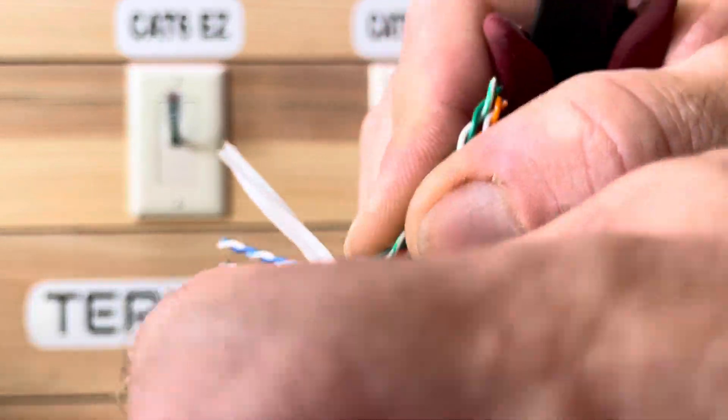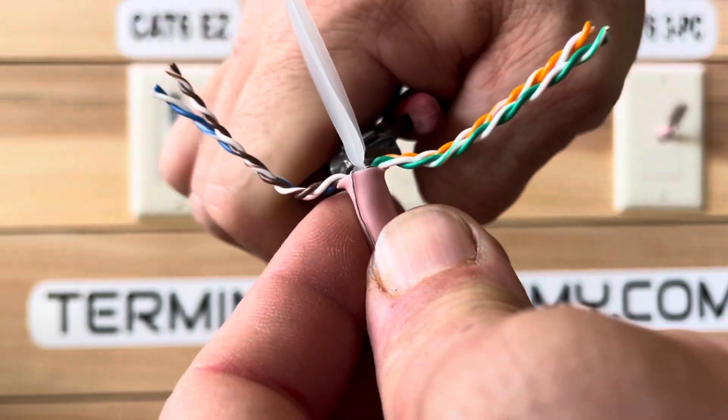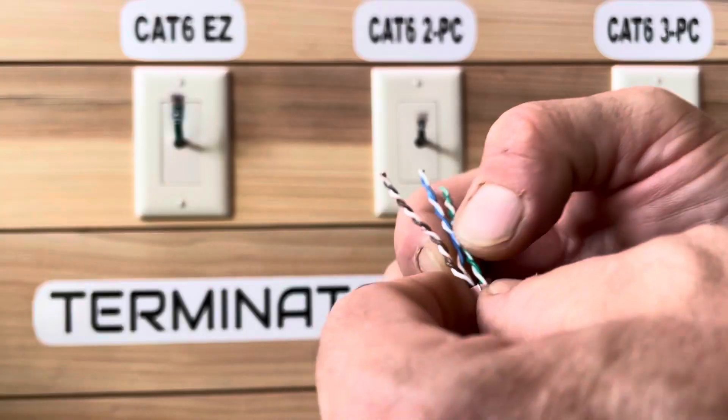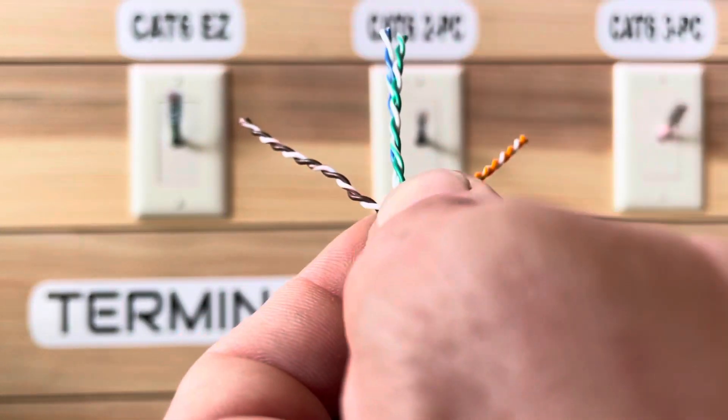After the protective plastic has been removed, you will need to inspect the wires for any damage. Next we'll need to remove the spline. The next step is the most important. If not done correctly, your termination will not pass.